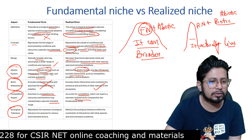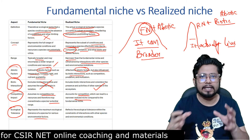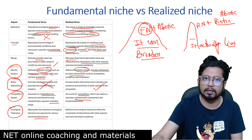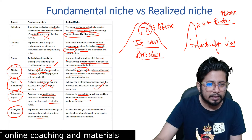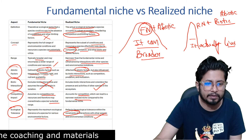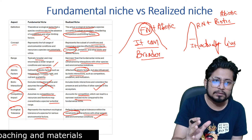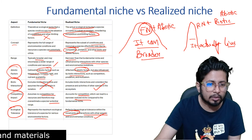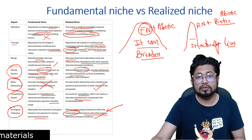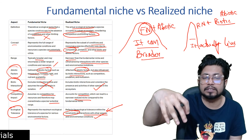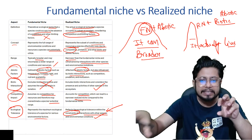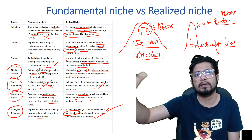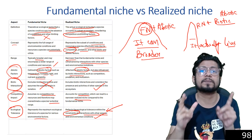Regarding ecological tolerance: fundamental niche represents the maximum ecological tolerance of a species for various environmental factors, since only abiotic factors matter. In realized niche, ecological tolerance is constrained by interactions with other species and environmental conditions — biotic factors are in place alongside environmental parameters. When discussing realized niche, we must always consider not just temperature, salinity, or rainfall, but also how a species survives in the presence of competing species — their presence and abundance always matter.